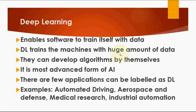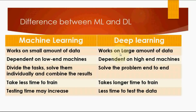Now the difference between Machine Learning and Deep Learning. Machine Learning: works on small amounts of data, dependent on low-end machines, divides tasks, solves them individually and combines results, takes less time to train but testing time may increase. Deep Learning: works on large amounts of data, dependent on high-end machines, solves the problem end-to-end, takes longer time to train but less time to test.